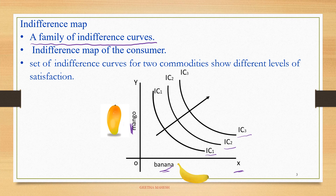IC1 gives one level of satisfaction, IC2 gives a different level of satisfaction, and IC3 gives a different level of satisfaction. When a consumer makes a combination by considering mango and bananas, he can make any number of combinations according to his preference. When placed on a graph, you get a set of indifference curves for two commodities, and each indifference curve represents a particular level of satisfaction.